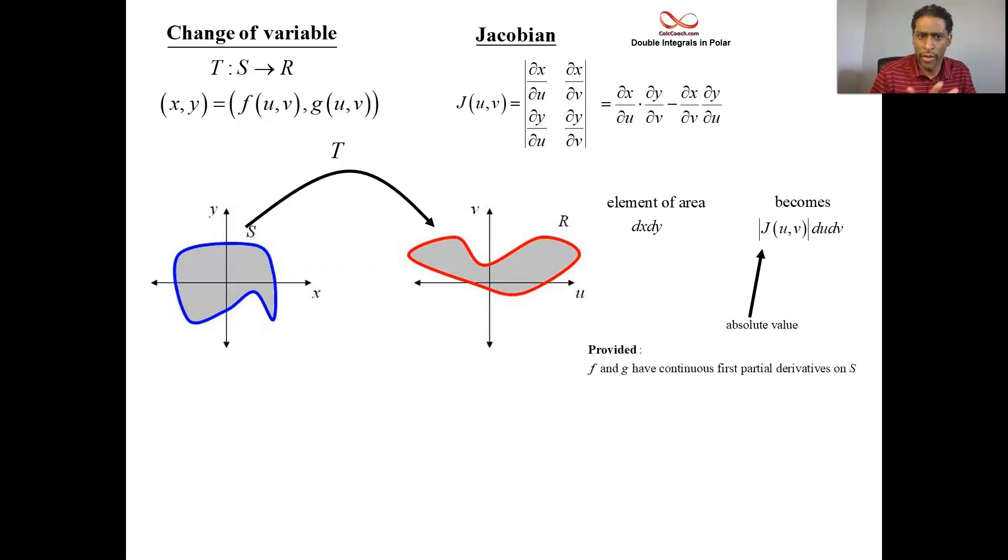There's some things that need to be true before you can do this. The functions f and g, which give you the transformation, they have to be continuous. They have to have first partials that you can use to find the Jacobian. The mapping needs to be one-to-one. It needs to be one that you can invert and be able to map backwards from UV world back into XY world. And that reverse transformation will have its own Jacobian as well.